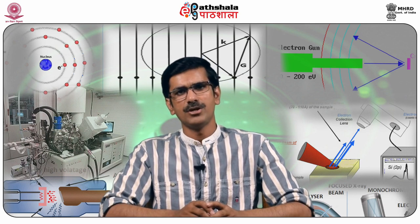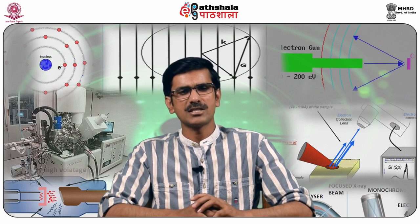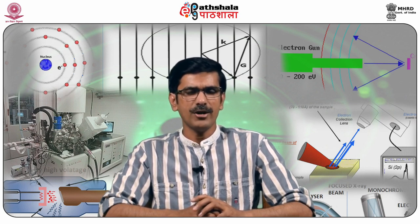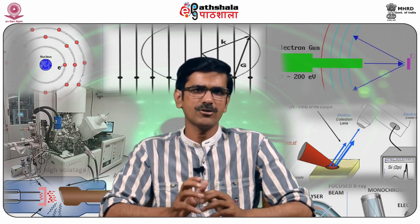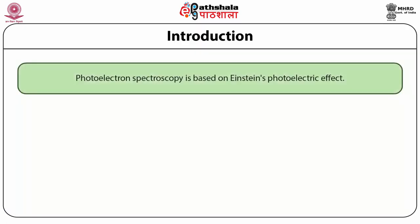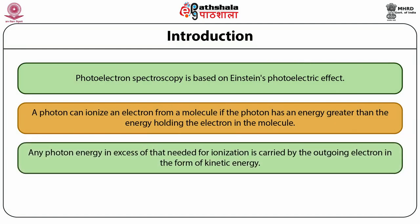It is an experimental method used to determine the electronic structure of atoms and molecules. It detects the kinetic energy of electrons escaped from the surface. It utilizes photoionization and analysis of the kinetic energy distribution of the emitted photoelectrons to study the composition and electronic state of the surface region of a sample. Photoelectron spectroscopy is based on Einstein's photoelectric principle. The photoelectric effect is the emission of electrons or other free carriers when light is shone on a material. Electrons emitted in this manner can be called photoelectrons. A photon ionizes an electron from a molecule if the photon has energy greater than the energy holding the electron in the molecule. Any photon energy in excess of that needed for ionization is carried by the outgoing electron in the form of kinetic energy.